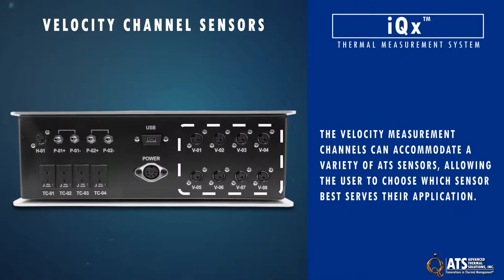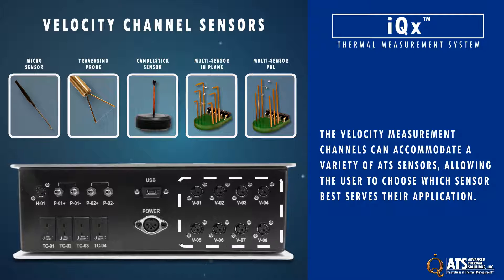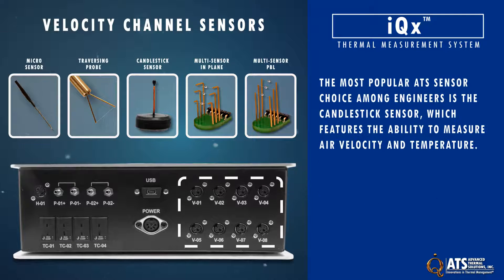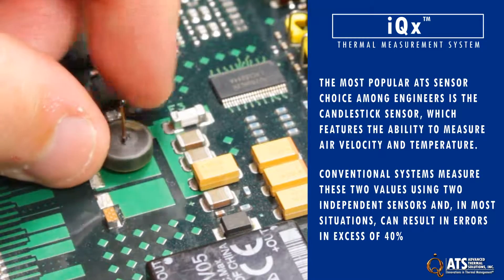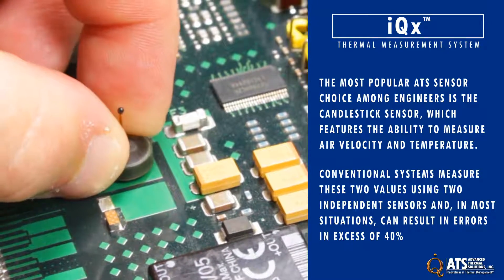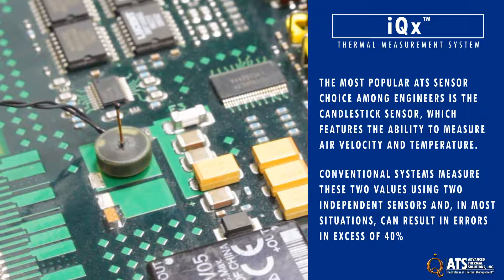The velocity measurement channels can accommodate a variety of ATS sensors, allowing the user to choose which sensor best serves their application. The most popular ATS sensor choice among engineers is the candlestick sensor, which features the ability to measure air velocity and temperature. This capability of IQX to measure airflow and temperature at the same point minimizes errors that can be introduced as a result of temperature gradients.